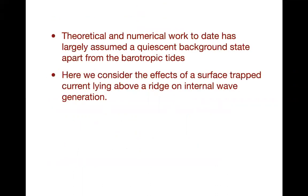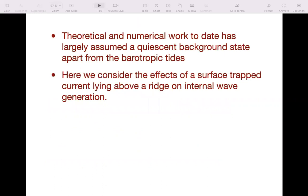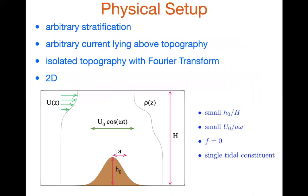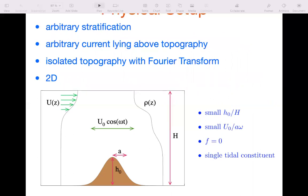Theoretical and numerical work to date has largely assumed a quiescent background state apart from the barotropic tides. Here I'm going to consider mainly the effects of a surface-trapped current lying above a ridge on internal wave generation. Here is a schematic showing the setup: an arbitrary stratification and an arbitrary current that lies above the topography, so the current itself is not flowing over the ridge and generating waves. All the wave generation is due to the tidal currents. I've got an isolated topography with a Fourier transform, and it's all two-dimensional.